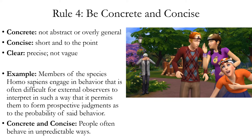Here's the simplified version: "People often behave in unpredictable ways." That's basically all that's being asserted. "Members of the species Homo sapiens" is just people. "Engage in behavior that's often difficult for external observers to interpret" is just behave in unpredictable ways. The whole last part of that sentence is just expressing the idea that people's behavior is often unpredictable.